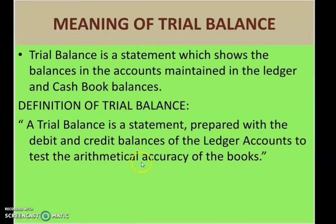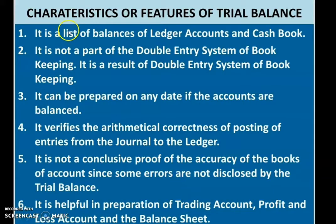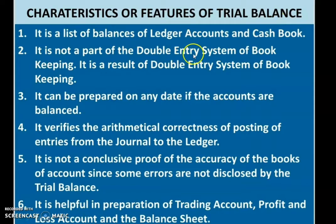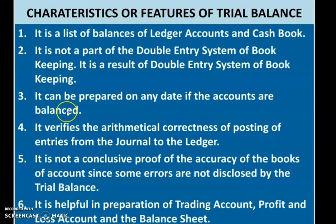There are certain characteristics or features of a trial balance. First, it is a list of balances of the ledger and cash book — when you close the ledger account, whatever balance you get is listed in the trial balance. Second, it is not a part of the double entry system of bookkeeping; it is a result of the double entry system. The journal entry and the ledger posting are part of double entry, but the trial balance is not — it is a result of it.